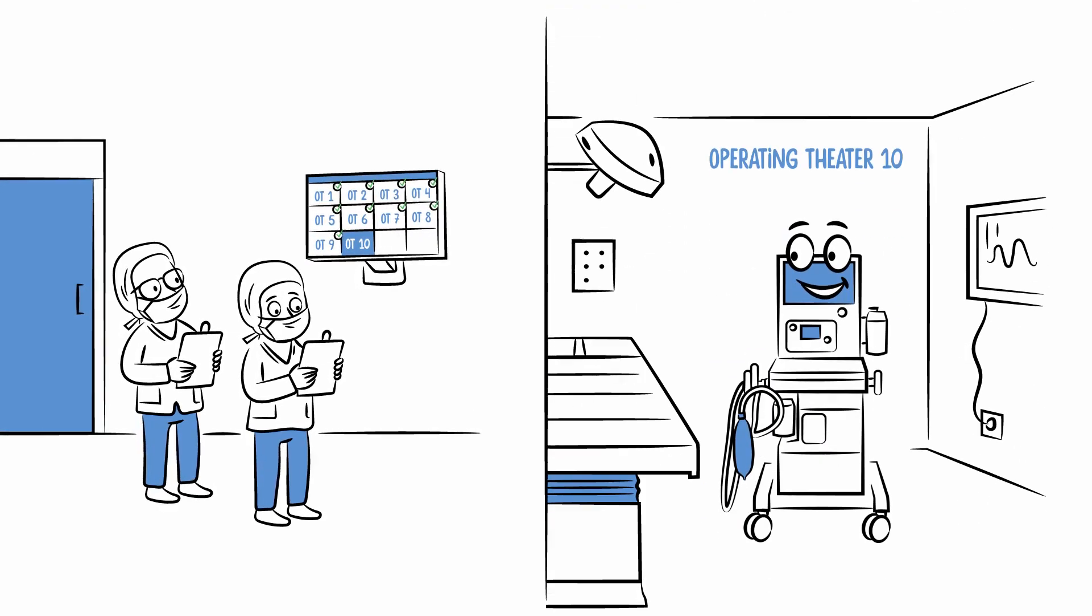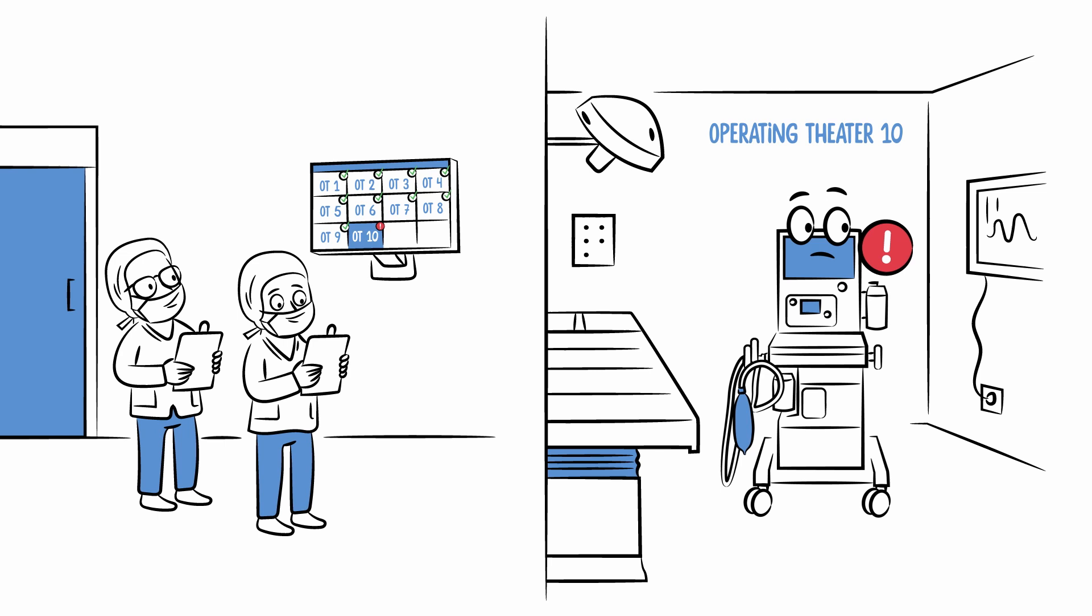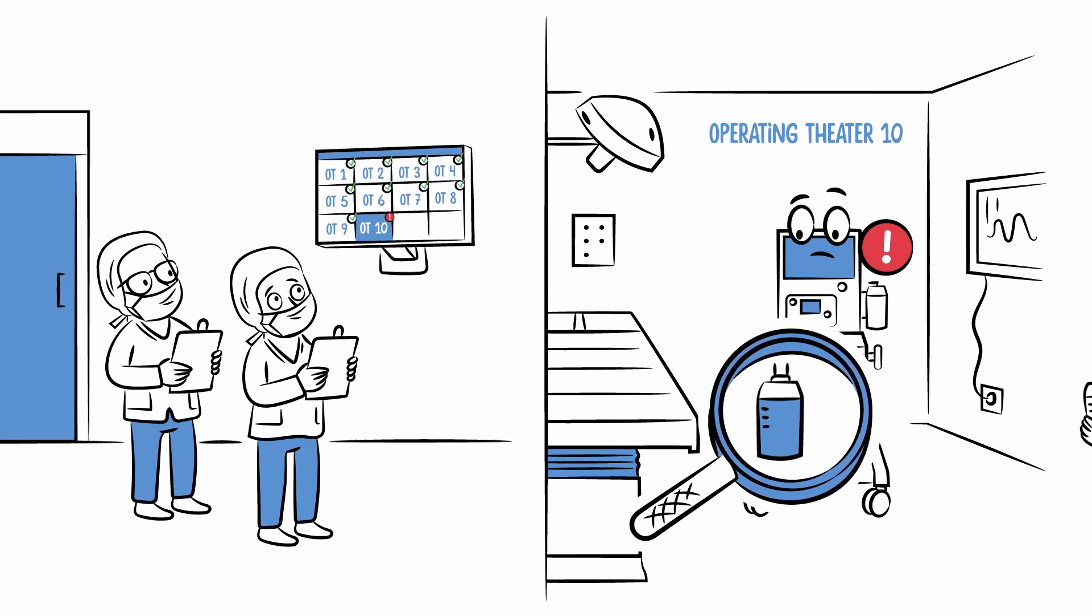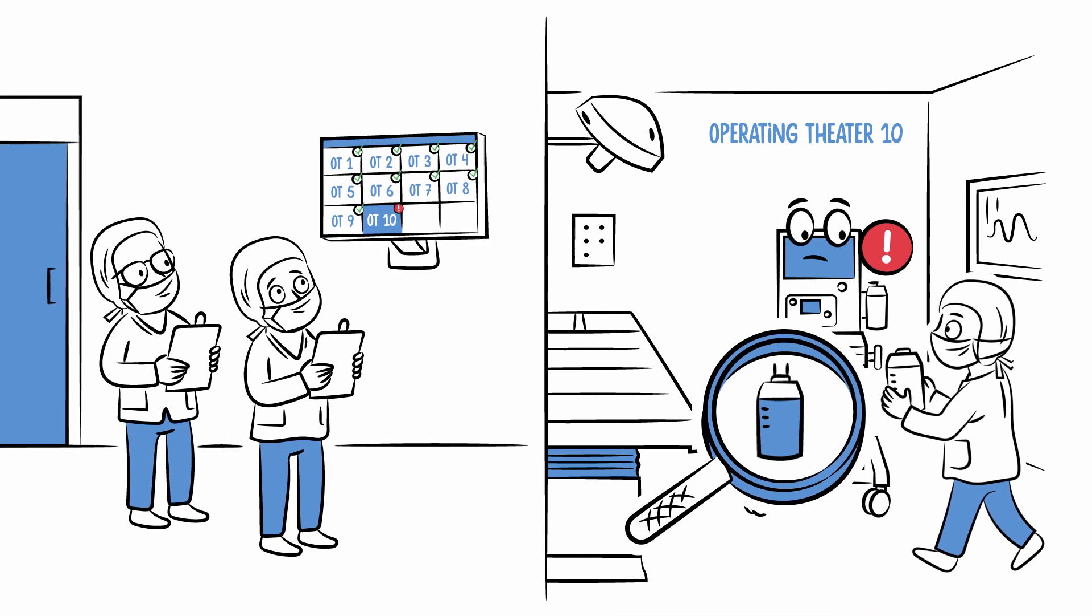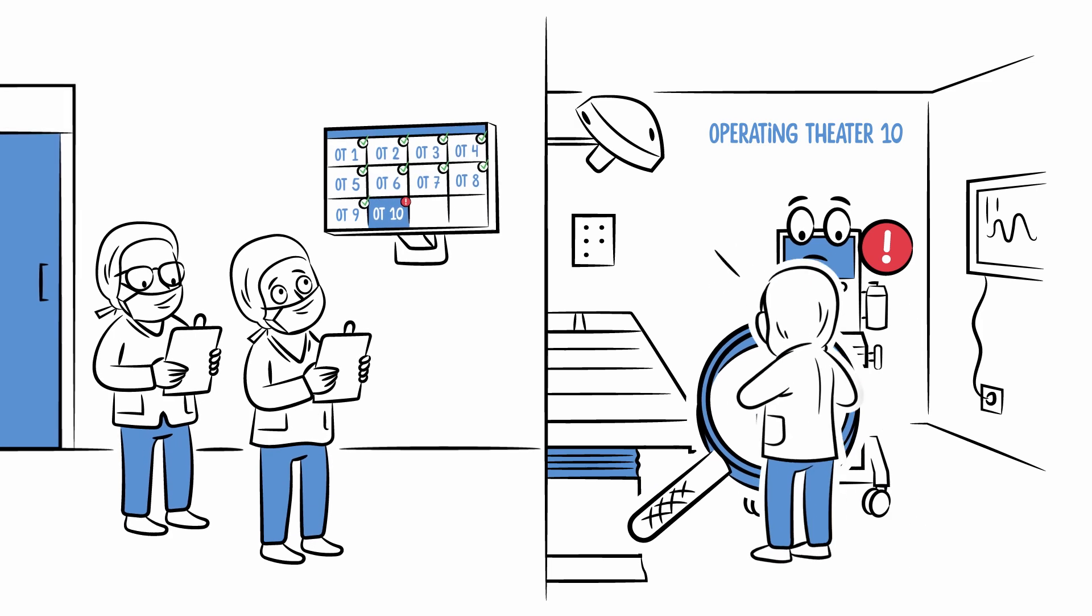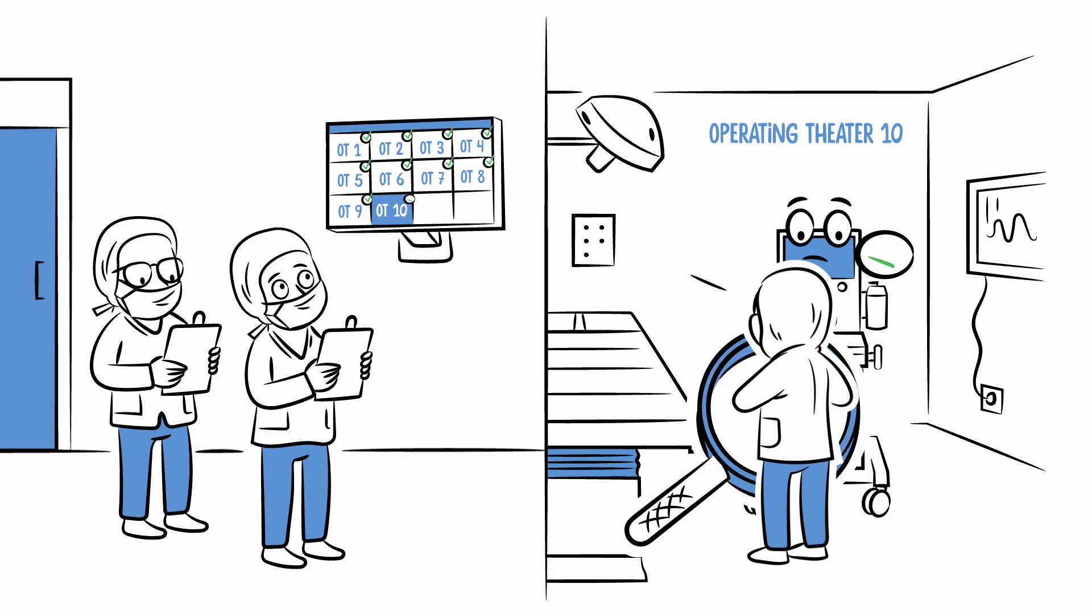In case an anaesthesia machine system test isn't completed successfully, the Self-Test Tracker acts as an assistance system and immediately provides staff with error information and troubleshooting steps.